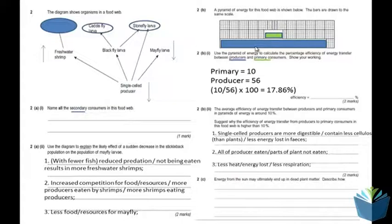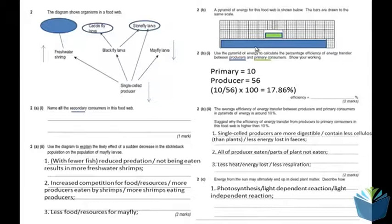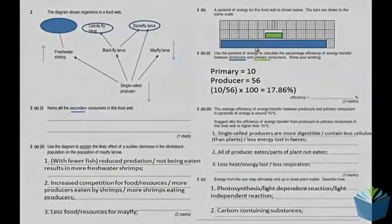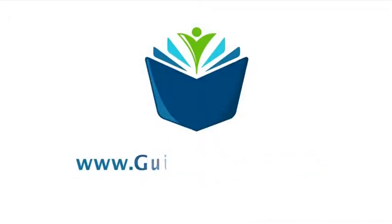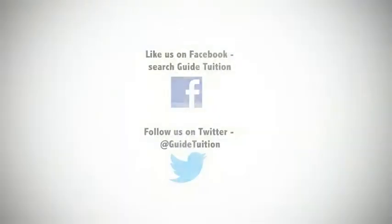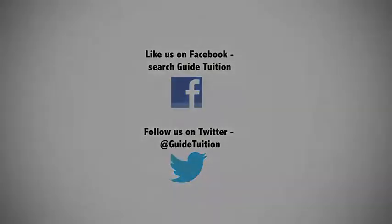Question 2c: energy from the sun may ultimately end up in dead plant matter — describe how. You have to explain how energy goes from the sun into dead plant material. The plant must photosynthesize, and then uses the products of photosynthesis to make carbon-containing substances — for example, glucose, cellulose, starch — which could then end up in the dead material. You need to state photosynthesis and then reference the production of carbon-containing substances.